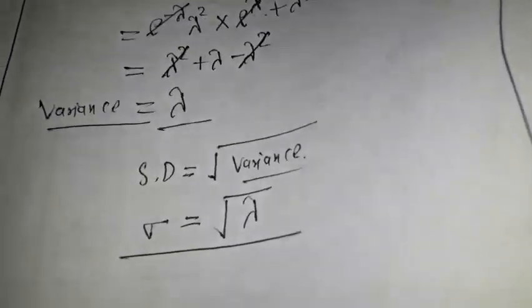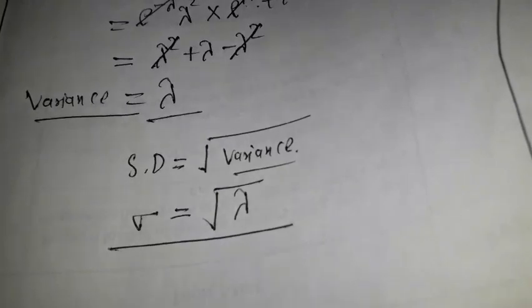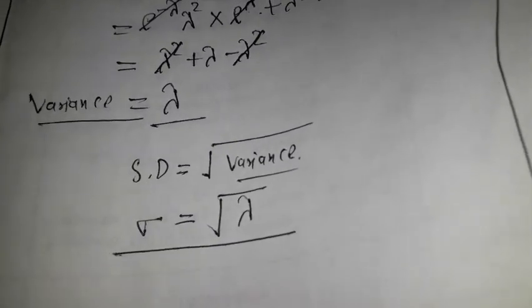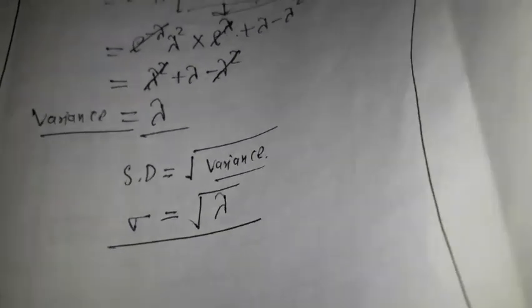So the variance is also expressed in terms of the parameter lambda. In this way, both the mean and variance of the Poisson distribution can be represented in terms of lambda. Now the standard deviation equals under root of variance, so standard deviation of the Poisson distribution equals under root lambda.